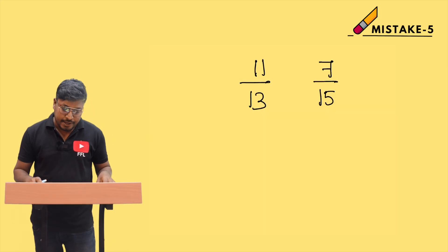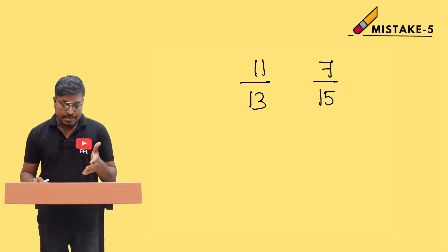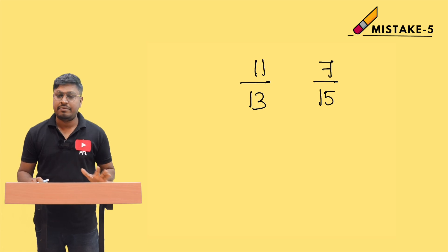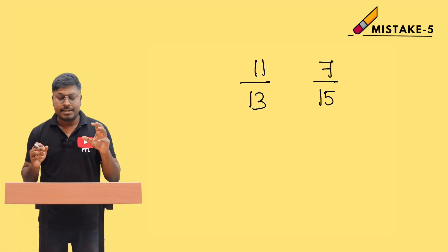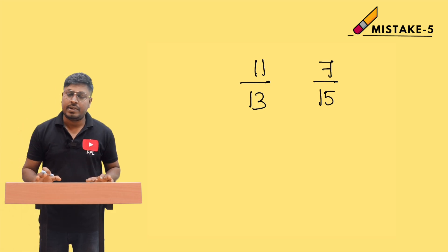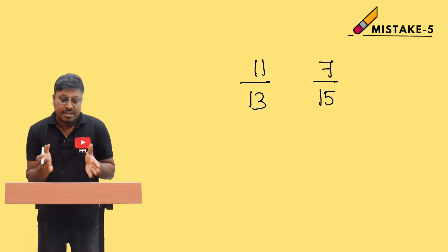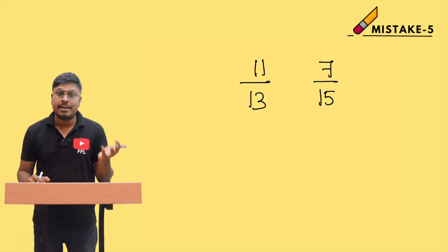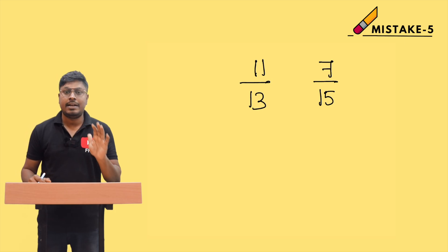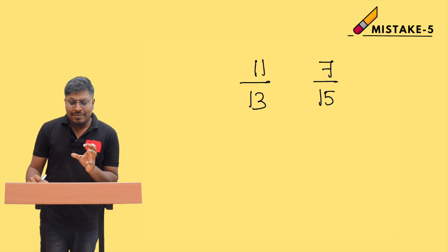This is video number 5 in the mistake series, based on simplification — we need to compare fractions. We have two numbers: 11/13 and 7/15. We need to check which of these two numbers is greater — whether 11/13 is greater or 7/15 is greater.